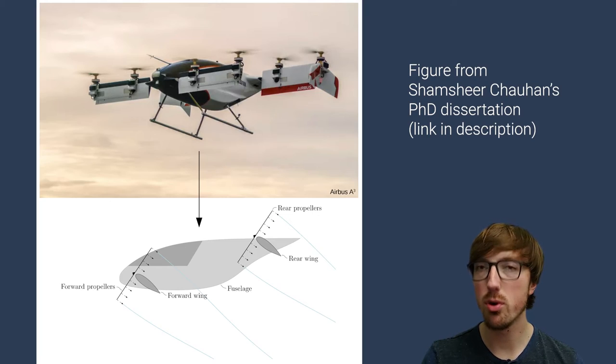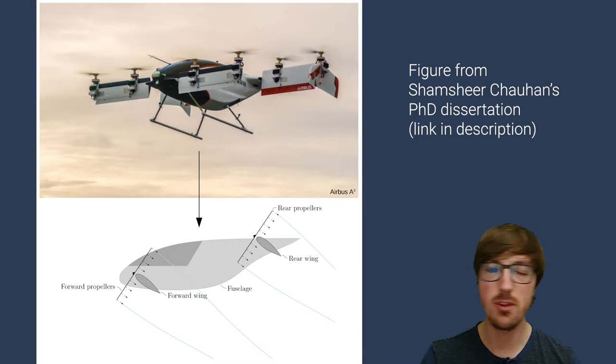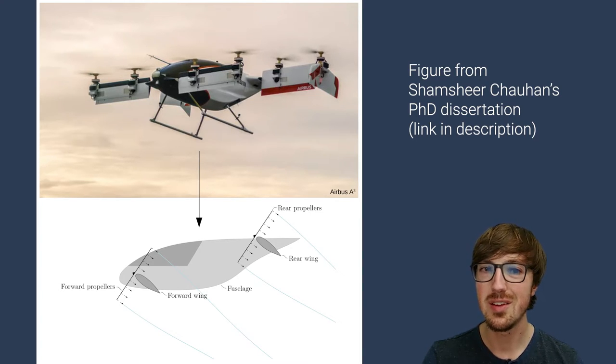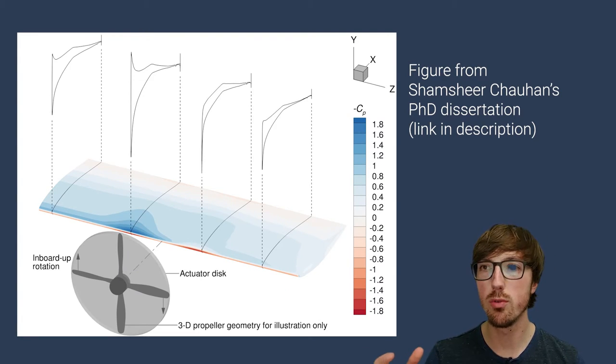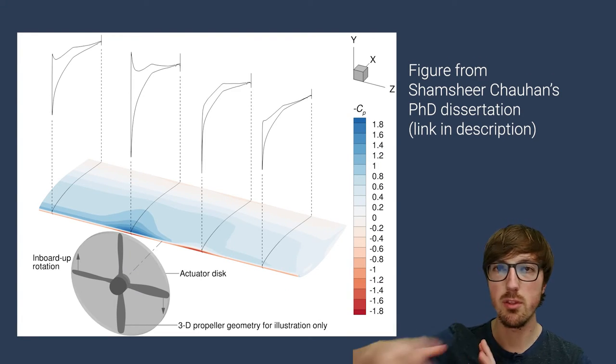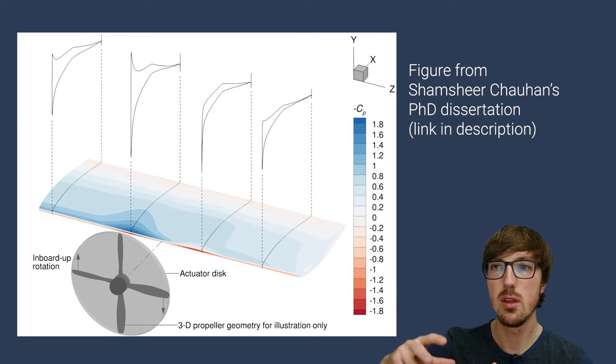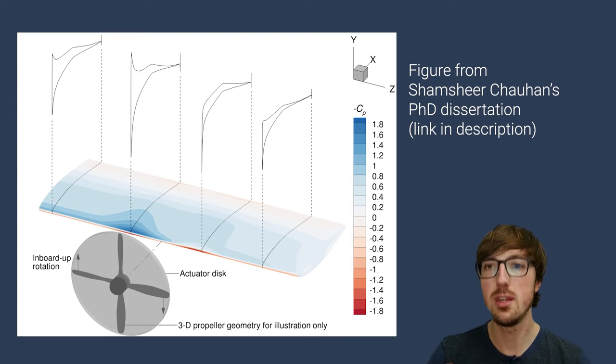Another example comes from one of my friend and colleague's work, Shamshir Chahan. He looked at aeropropulsive coupling specifically for propellers over wings. This is all the rage in vertical takeoff and landing aircraft or VTOL aircraft. You can imagine that a propeller is blowing air over the wing. Inherently, there's coupling of the performance of the wing and the propeller. There's this implicit relationship that we need to resolve.